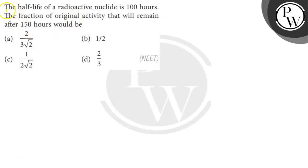Hello Vacho. Let's read the question. The half-life of a radioactive nuclide is 100 hours. The fraction of original activity that will remain after 150 hours would be what?